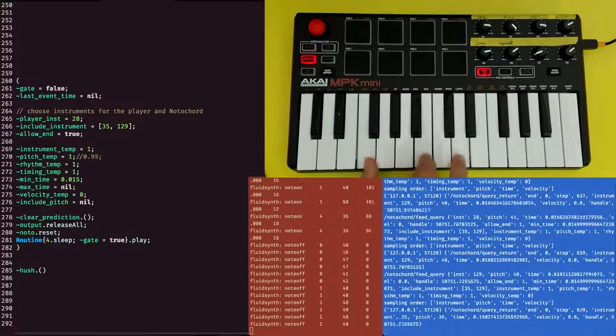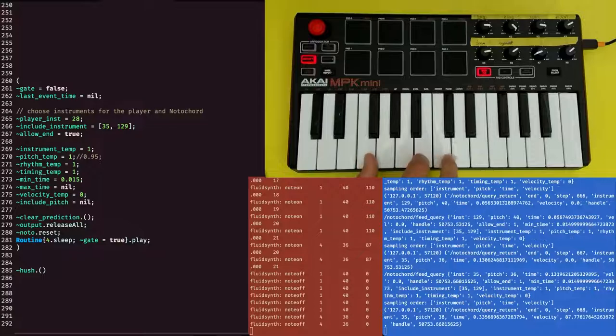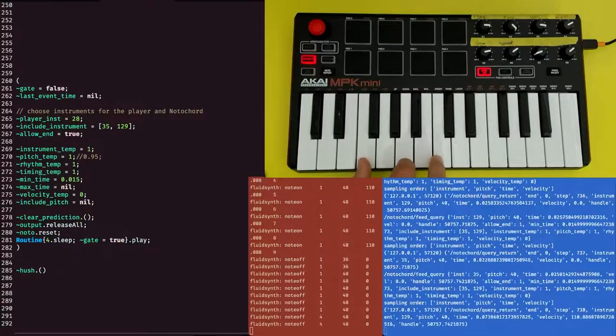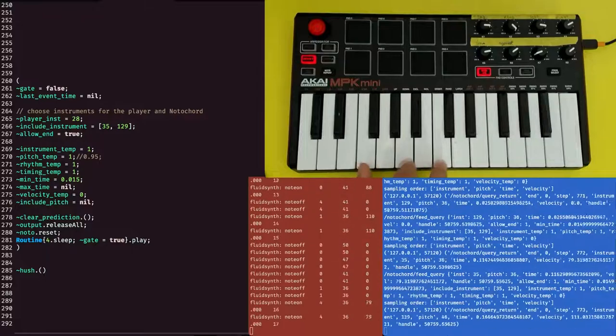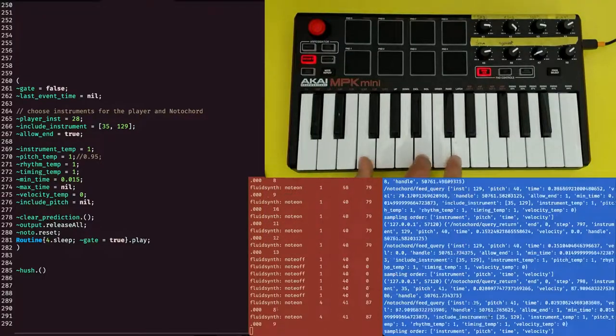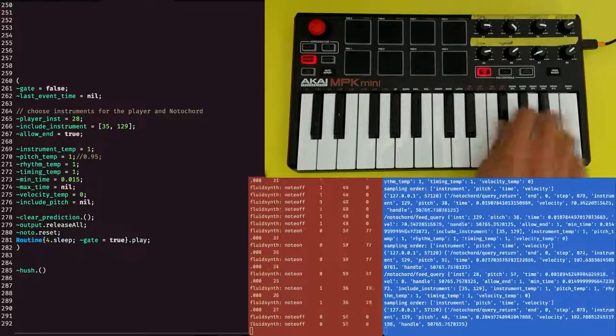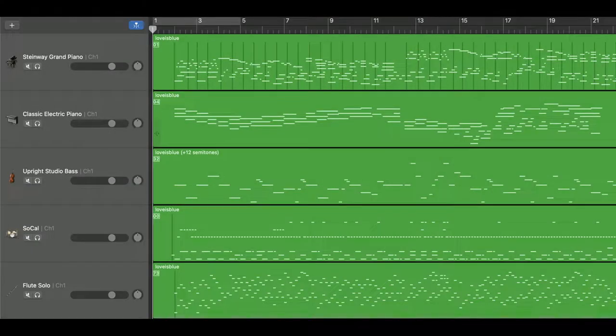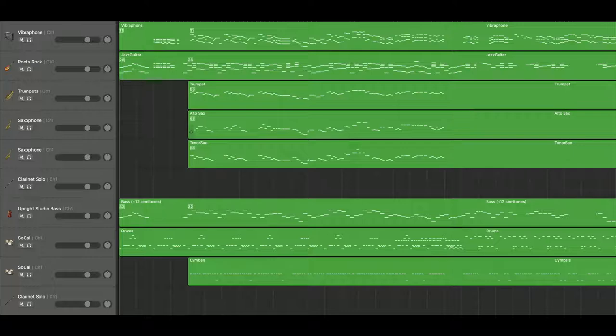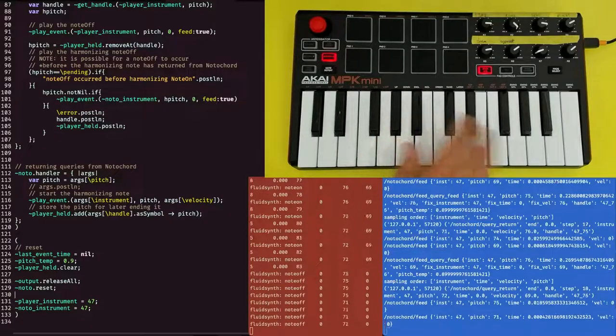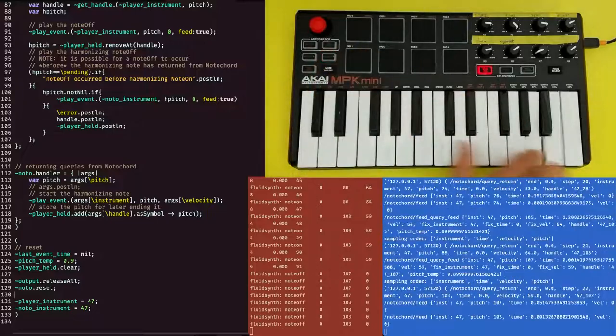Notochord is a probabilistic generative model. This means that it can distinguish probable from improbable streams, but also generate new streams which resemble its training data. We use MIDI because a stream of MIDI events can represent both a live performance with a controller, as well as preprogrammed songs. Hundreds of thousands of MIDI files are available as training data, and this lets us bring large-scale statistical AI into a performance context to feel how it behaves.